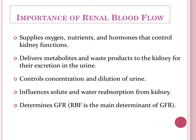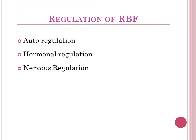The basic importance of renal blood flow: first, like all tissues, the kidney receives blood flow for oxygen, nutrition, and hormones that control its function. In addition to this nutritional demand, blood flow to the kidney is also important to deliver metabolites and waste products for excretion in the urine. This blood flow also controls the concentration and dilution of urine, influences solute and water absorption, and determines the GFR — glomerular filtration rate.